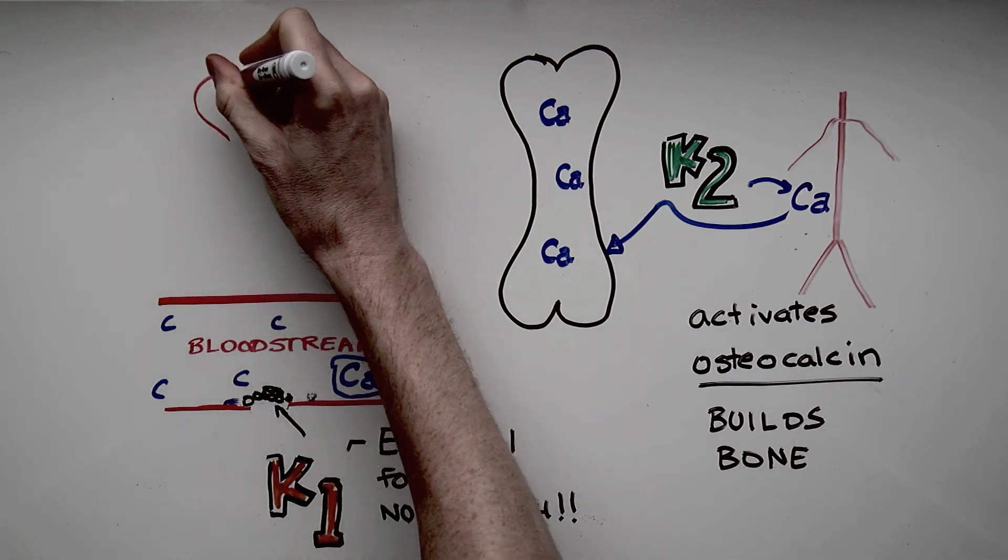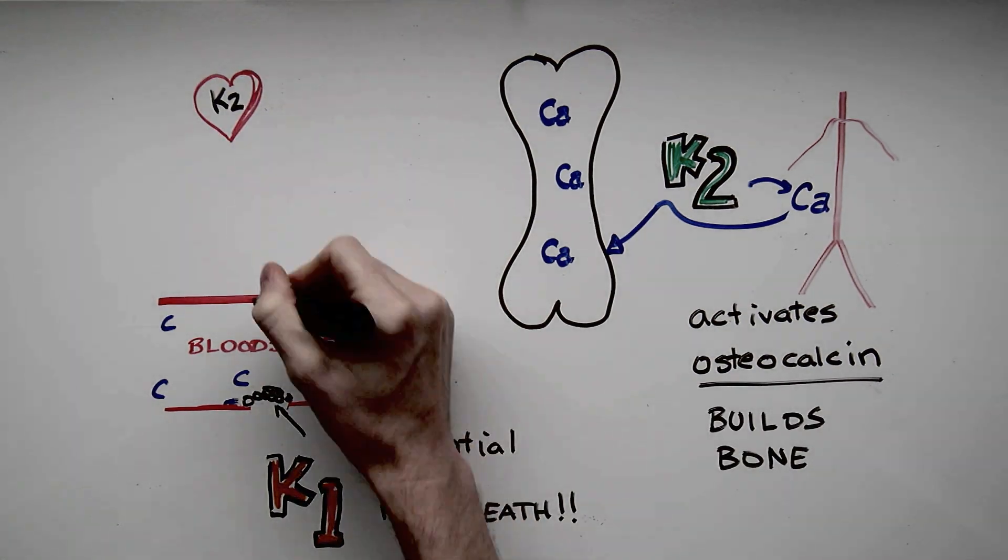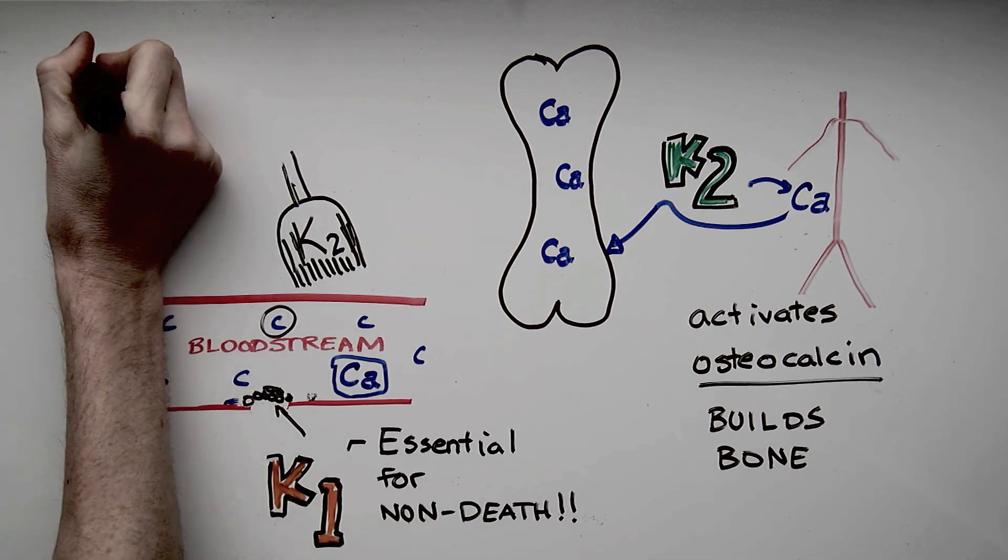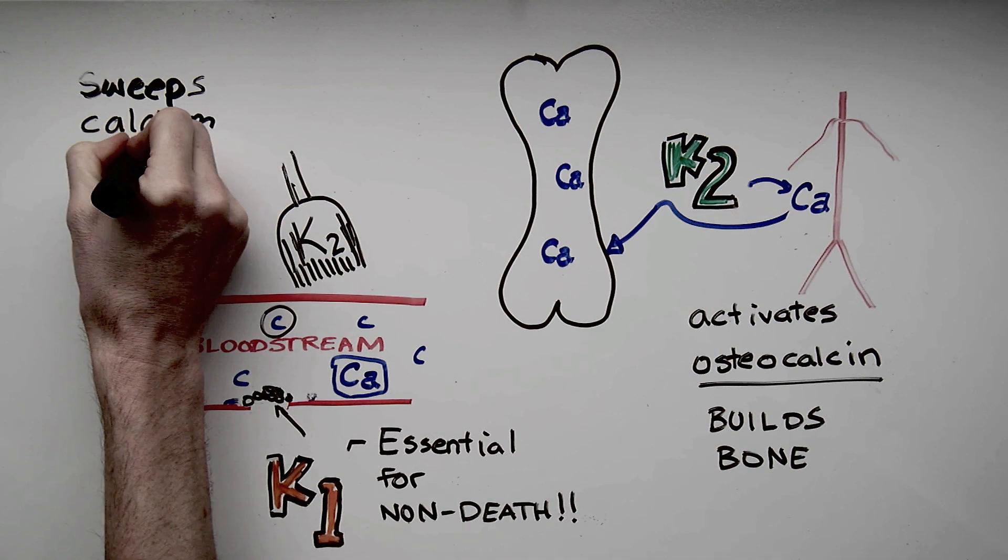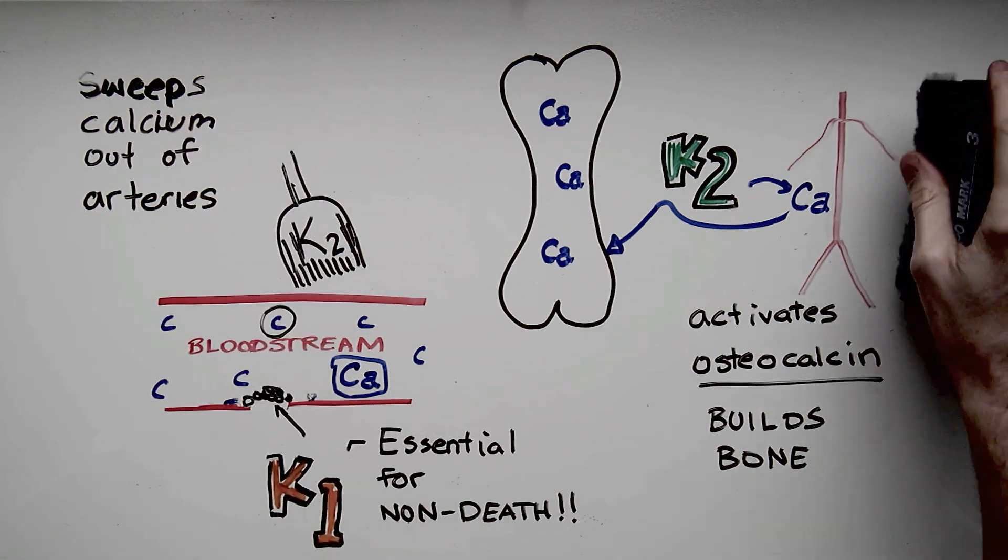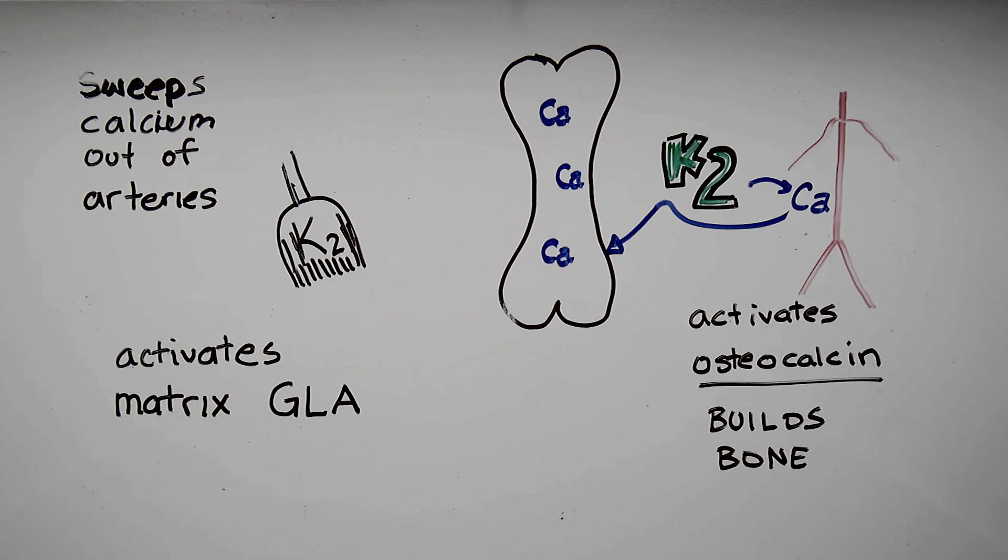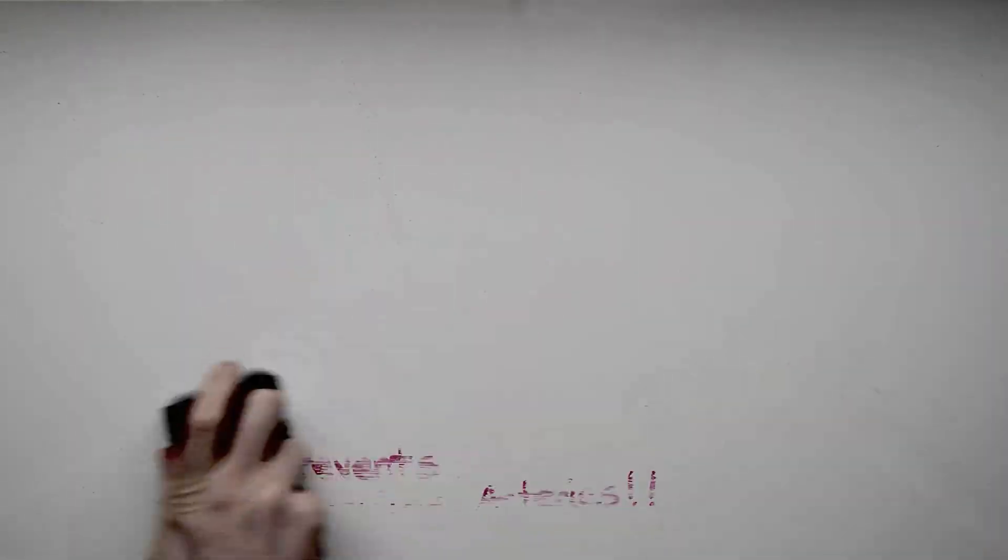Staying in our arteries where it could do damage. See how it does damage is it can embed itself in the soft tissue. So K2 also activates another protein which sweeps the calcium out of the arteries, and that protein is called matrix GLA. Essentially what this does is it prevents calcified arteries, and you don't want that. That leads to things like strokes, kidney stones, and all kinds of complications.